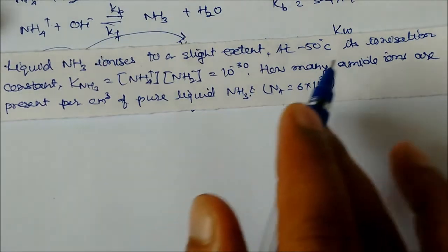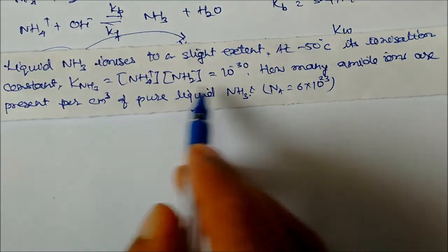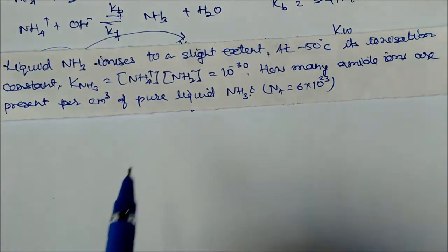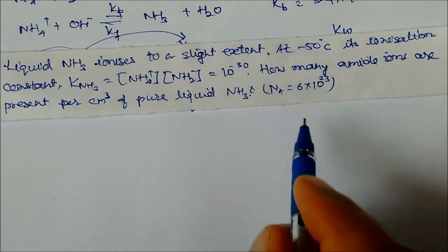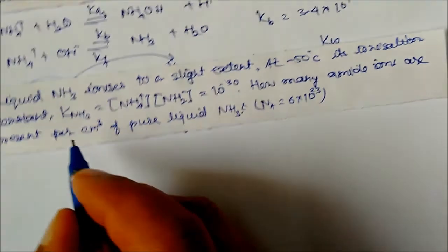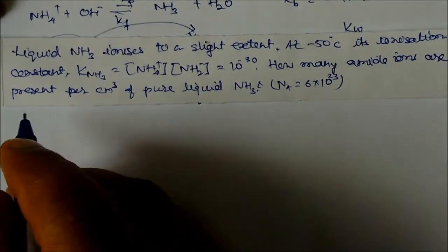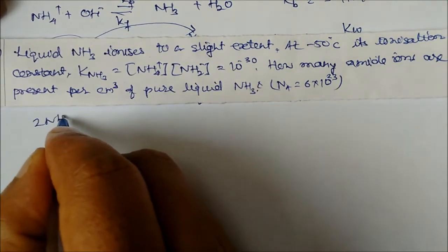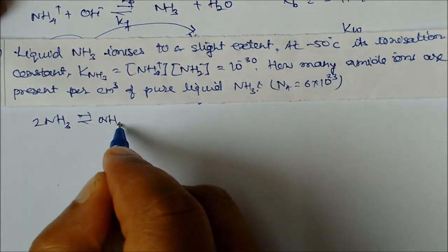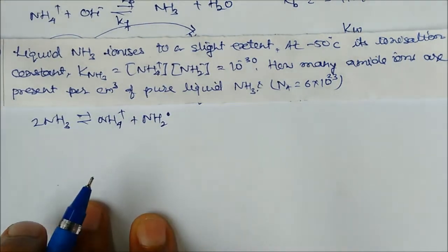Liquid ammonia ionizes to a slight extent. At −50°C, its ionization constant is given (Kion = 10⁻³⁰). The question asks how many amide ions (NH₂⁻) are present per cm³ of pure liquid ammonia. The ionization reaction is: 2NH₃ → NH₄⁺ + NH₂⁻.